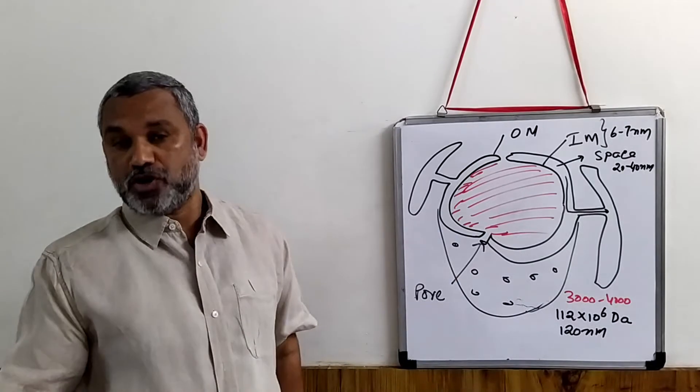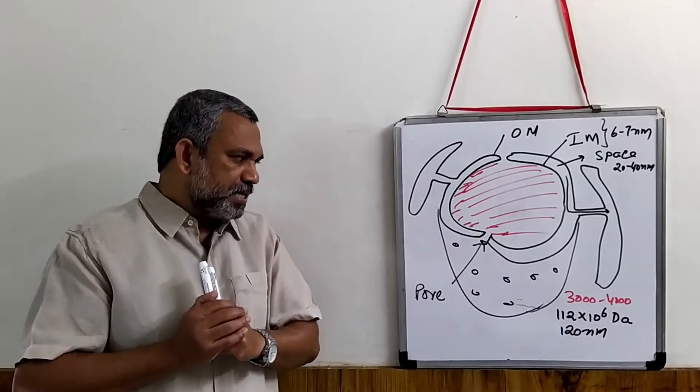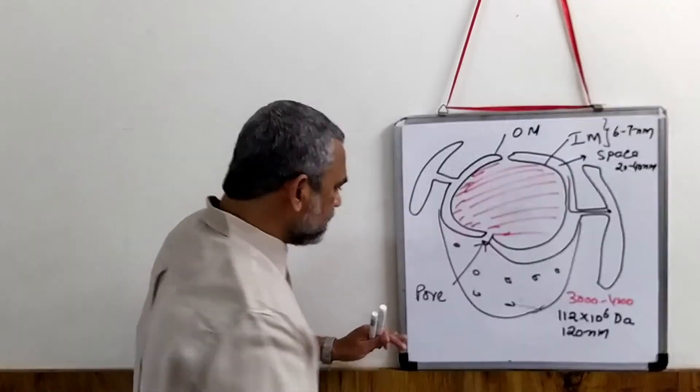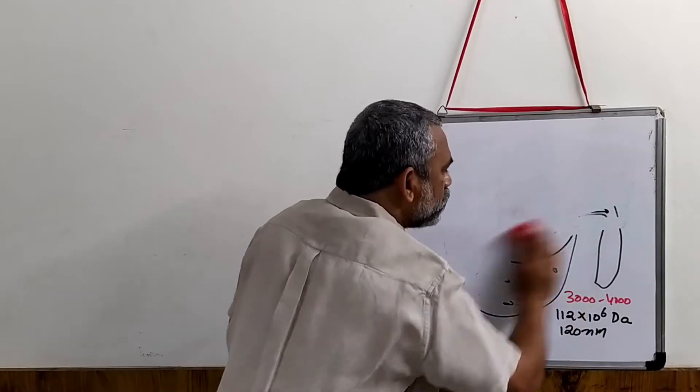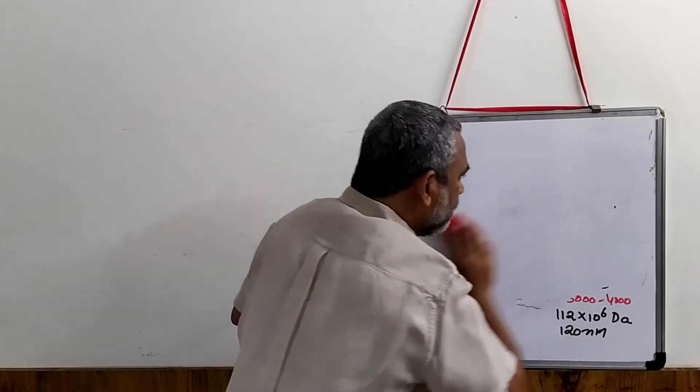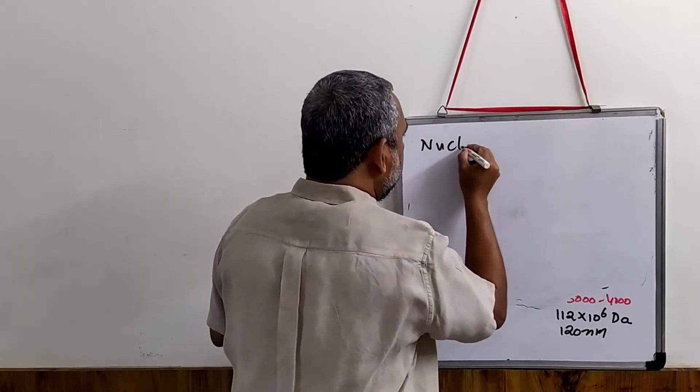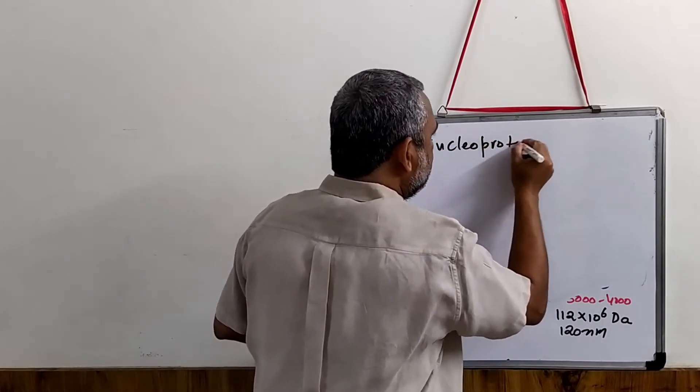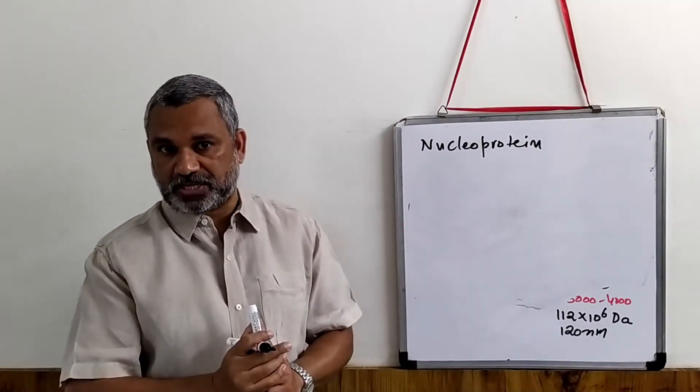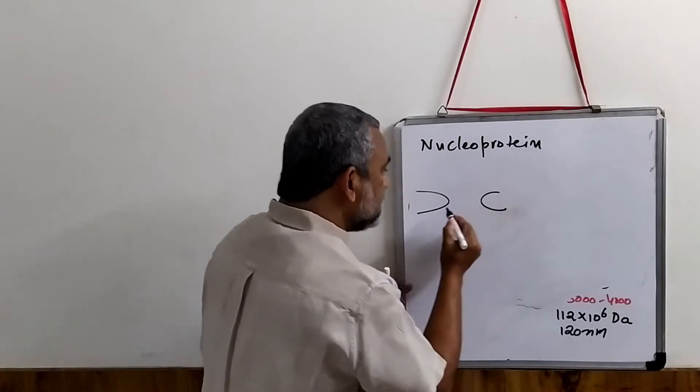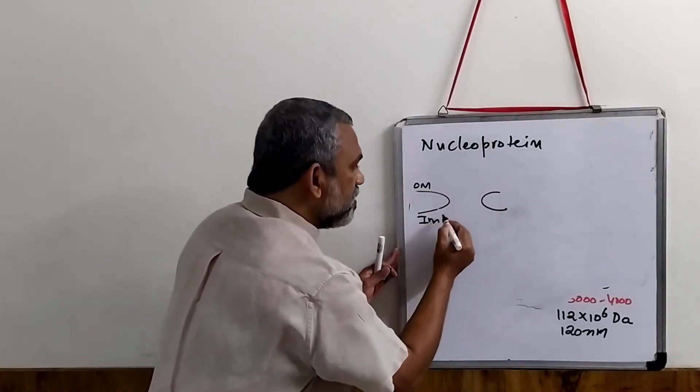The diameter is about 120 nanometers for the entire nucleopore. When you look very closely at the nucleopore, the nucleopore has a kind of proteins called the nuclear proteins. These nuclear proteins form a kind of symmetrical structure.